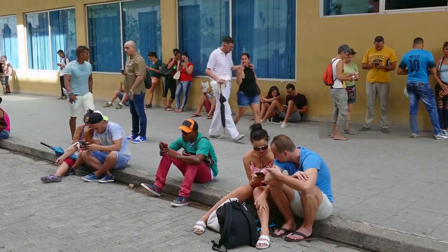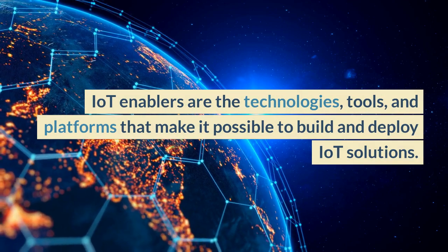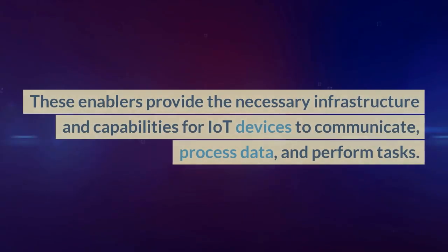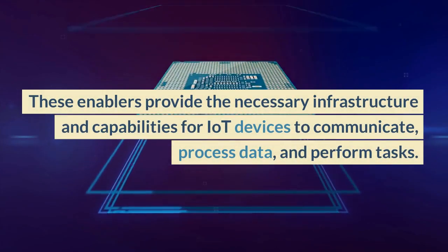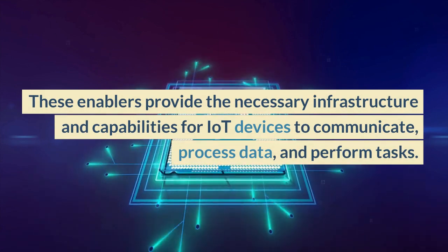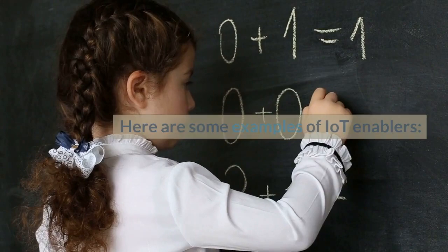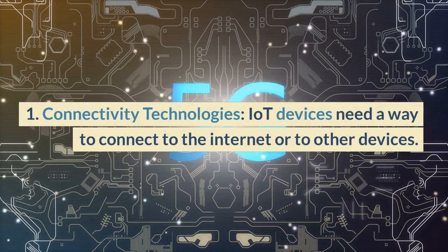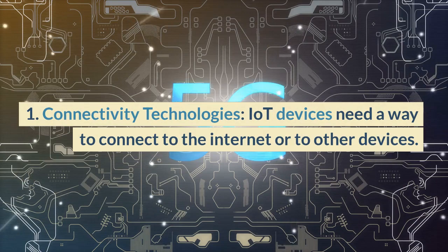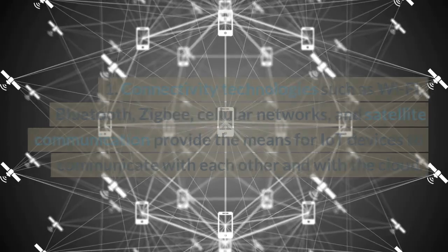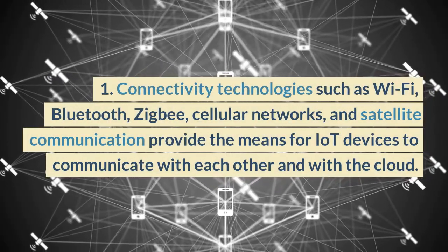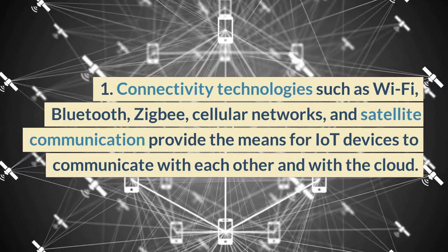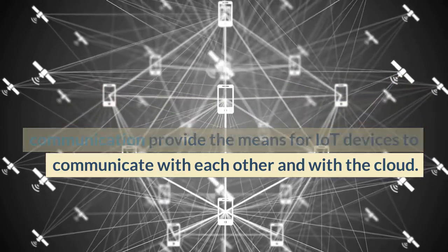IoT enablers are the technologies, tools, and platforms that make it possible to build and deploy IoT solutions. These enablers provide the necessary infrastructure and capabilities for IoT devices to communicate, process data, and perform tasks. First, connectivity technologies. IoT devices need a way to connect to the internet or to other devices. Connectivity technologies such as Wi-Fi, Bluetooth, ZigBee, cellular networks, and satellite communication provide the means for IoT devices to communicate with each other and with the cloud.